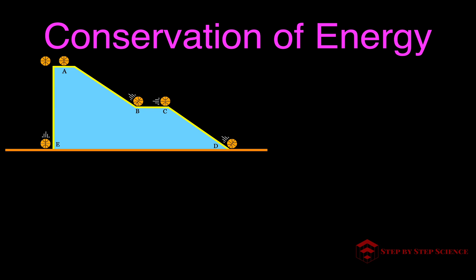Here is our first example problem — the ramp problem. We have a ball that will roll from A to B to C to D, and also a ball that goes straight down from A toward E. We're going to look at the potential energy, kinetic energy, mechanical energy, and velocity of the ball at each of those points.